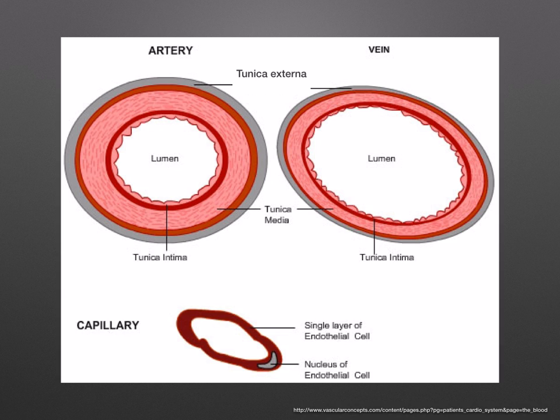Here you can see the capillary. It doesn't have these different layers; instead, it's only one cell thick, and it's made of a single layer of endothelial cells. Take a moment to look at the different layers: the tunica externa, tunica media, and tunica intima.